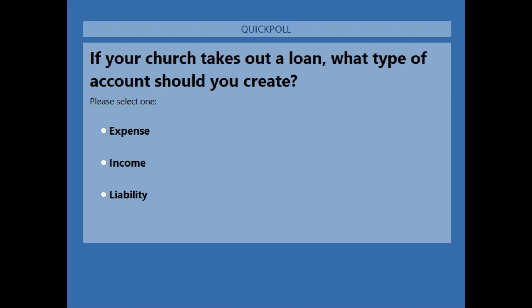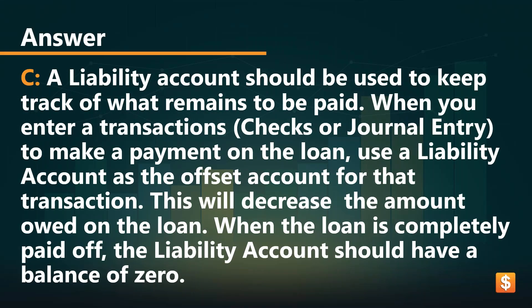The next poll: if by chance your church has to take out a loan, what account would you create for it? Looks like almost everybody voted — this is a liability account. Anything that needs to be paid, anything that you owe, would be a liability account. So when you enter in a transaction to pay the loan payment, you would use this liability as the offset account.